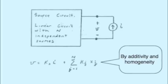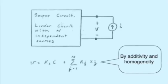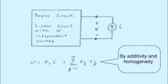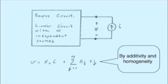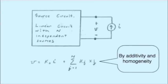For another perspective on Thevenin's equivalent circuit — in particular how one gets R-Thevenin — consider this approach. Here we see part A, the source circuit, described as a linear circuit with N independent sources. There can be any number of other linear circuit elements, and for the moment we're assuming the absence of dependent sources. Attached to the two terminals is also a current source with value I, and we see the circuit parameter V. Since this is a linear system, by superposition V may be expressed as a linear summation over the contributions of all the sources — both the N sources in the box and the external current source I.